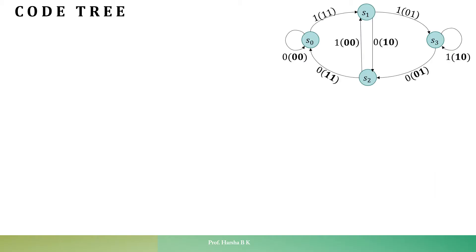We have already written the state diagram. From this state diagram, we can write the code tree. The length of the message is 5 bits, so the number of stages in the code tree should have 5 stages. Before we proceed, let us establish a convention: every time the input is 0, we will be moving in the upward direction. Similarly, if the input is 1, we will be moving in the downward direction. On power-on reset, the very first state is S0.